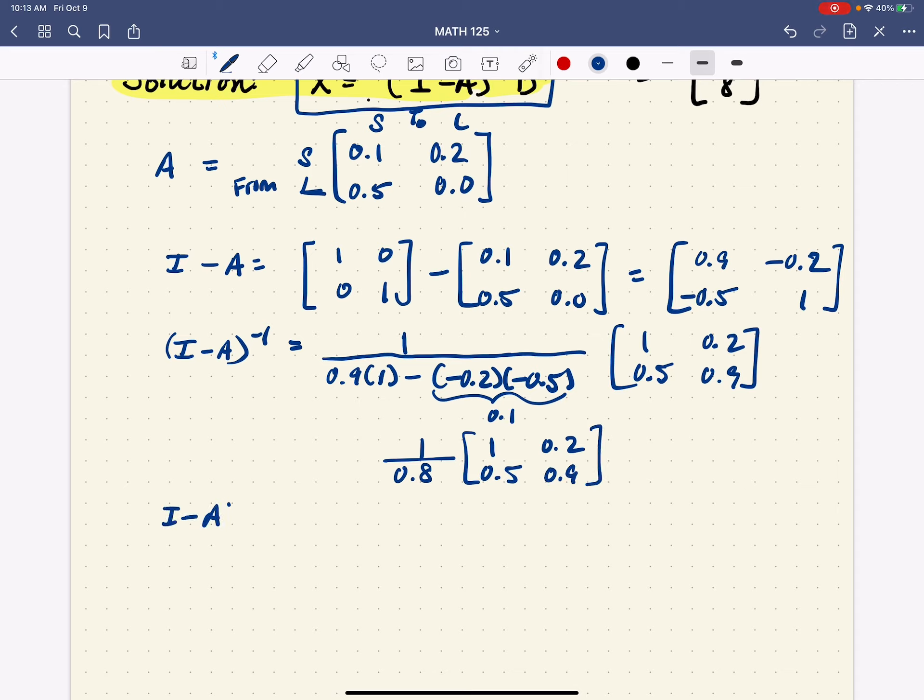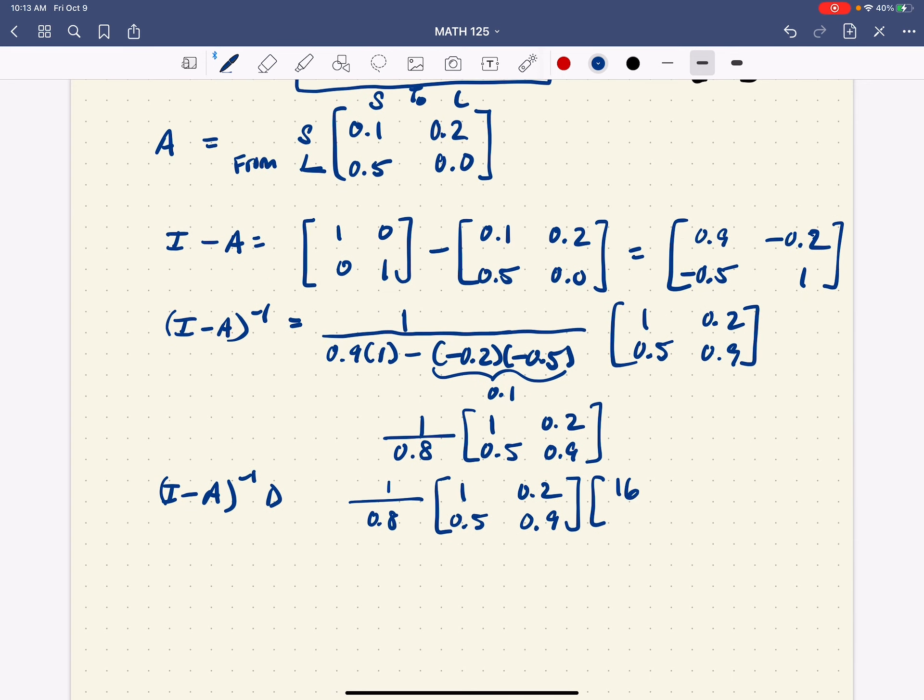So then I minus A inverse times D is just this whole thing written down again. I'm going to leave the 1 over 0.8 outside. And it was 16 and 8 that we desire. So multiplying matrices, 1 times 16 is 16, 0.2 times 8 is 1.6, 0.5 times 16 is 8, and 0.9 times 8 is 7.2. And that gives us this. And if we divide everything through by 0.8, that gives us 22 and 19. So that worked out pretty well.